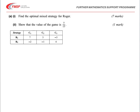So in the first part of the question we're looking at a mixed strategy for Roger. The way to do this is to first of all say that let Roger play R1 with probability P and R2 with probability 1 minus P.